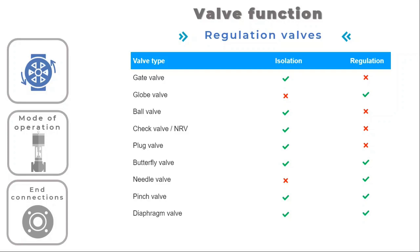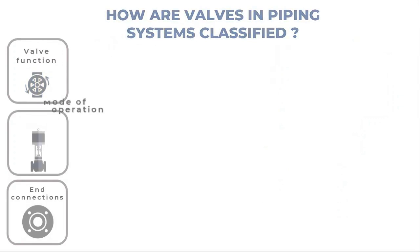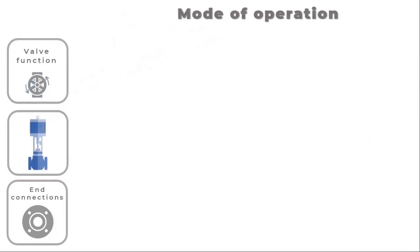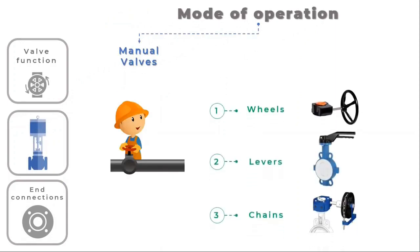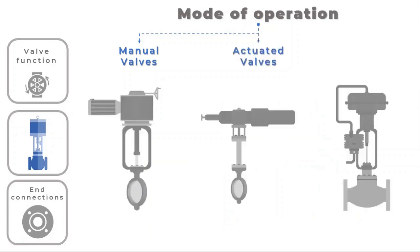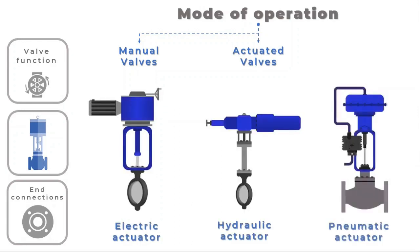Based on how they are operated, valves can also be categorized as manual, actuated, or automatic. To manually operate a manual valve, wheels, levers, or chains are frequently used. These valves can be geared mechanically to alter moving direction as well as to speed up or enhance torque. Valves are frequently coupled to electric motors, hydraulic systems, or pneumatic systems in high-precision or large-scale applications to enable remote operation and automation of valve performance.